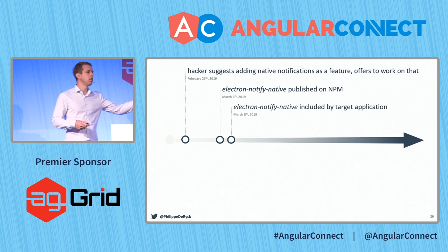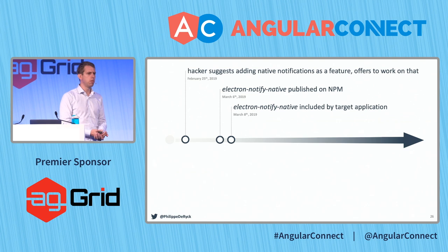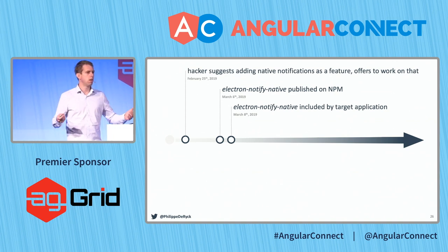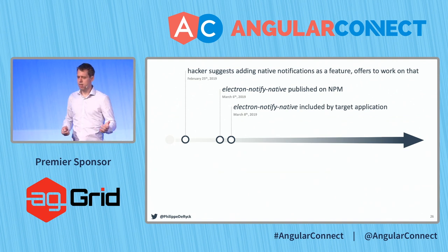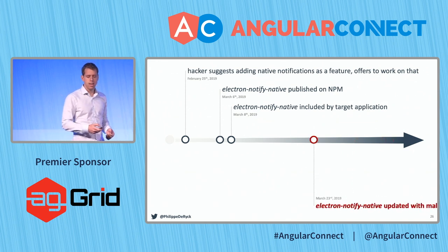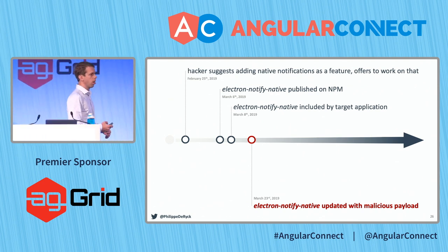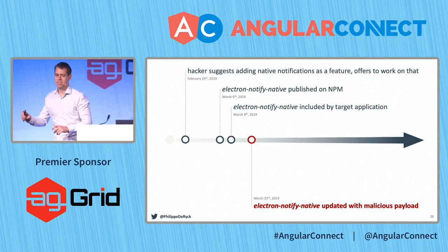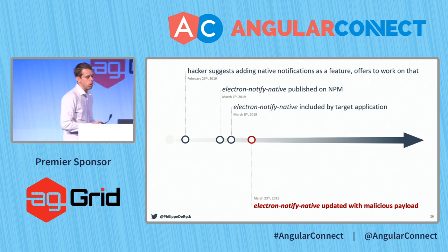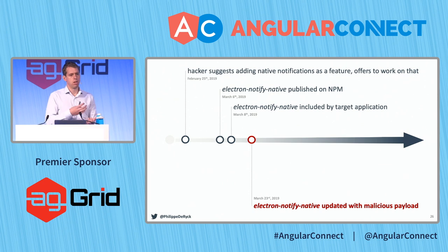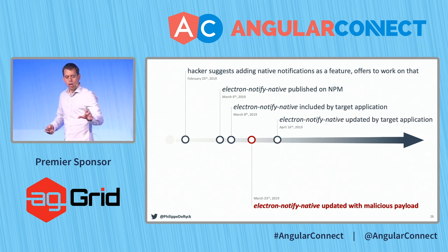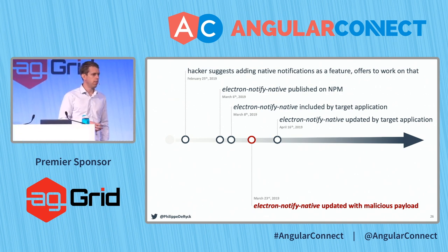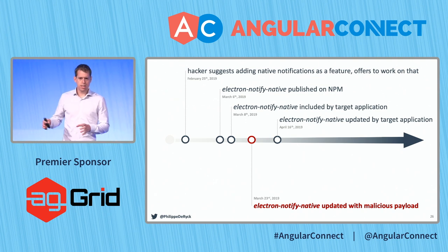Once the dependency was included, the attacker pushed an update to their package with malicious code — they increased the version number and now the package did the notification plus a little bit extra. That extra was code to steal the seeds from the wallets and publish them to a server, building a database to get access to all those wallets at the same time. A couple of weeks later, the wallet application included that dependency and deployed it, and the malicious code started running, collecting seeds and publishing them to a server — just waiting to grab all the money.